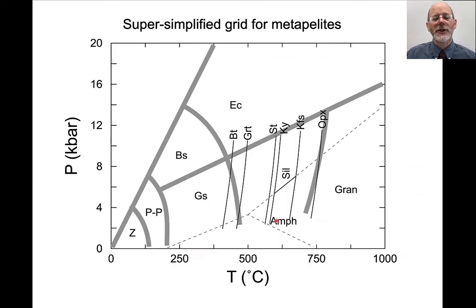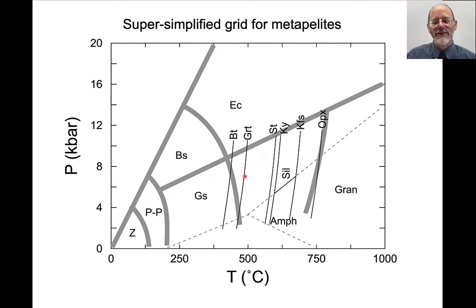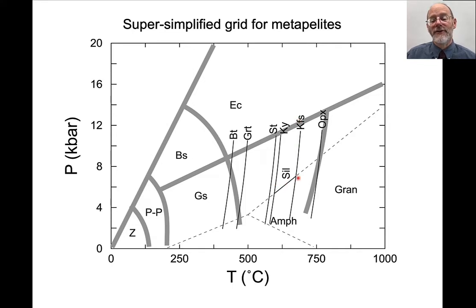When we look at the distribution of Barrow's zone minerals on a pressure-temperature diagram, they distribute themselves approximately like this. Low temperature is the chlorite zone. At around 450°C, biotite will form, so rocks in that field will have biotite. At typically 475–500°C, garnet will form and will be stable at higher temperatures. As temperature increases, we see staurolite form at higher temperature, then kyanite. Transitioning into the sillimanite zone, sillimanite becomes stable, followed by K-feldspar. At very high temperatures, we can see orthopyroxene forming.